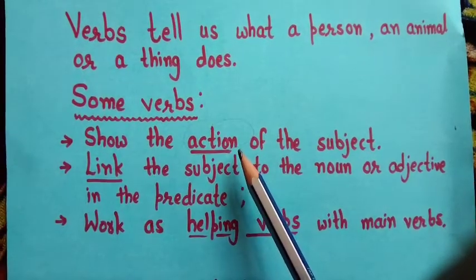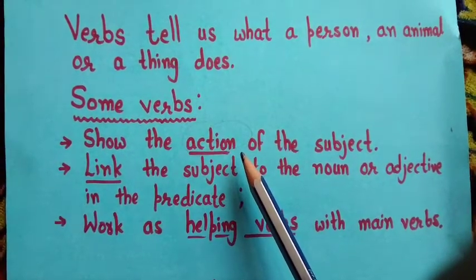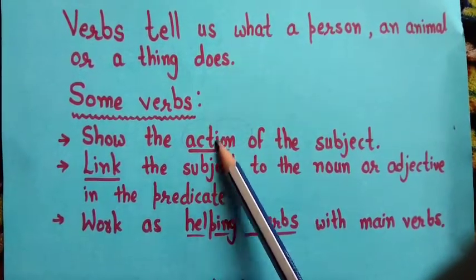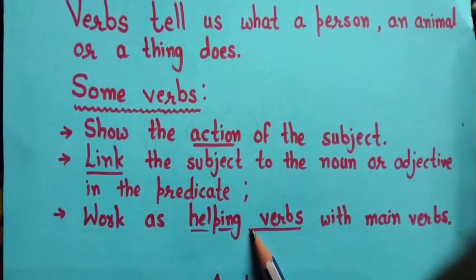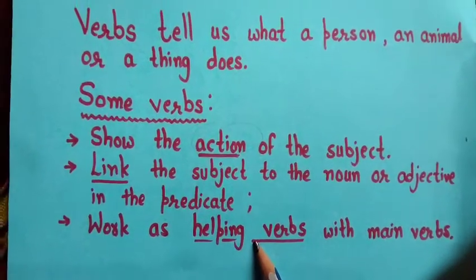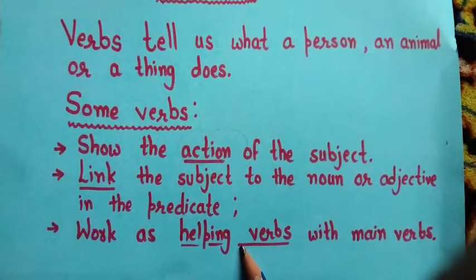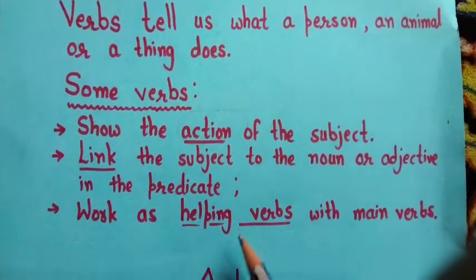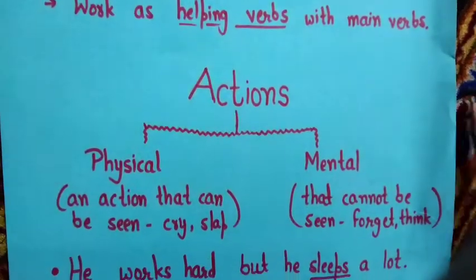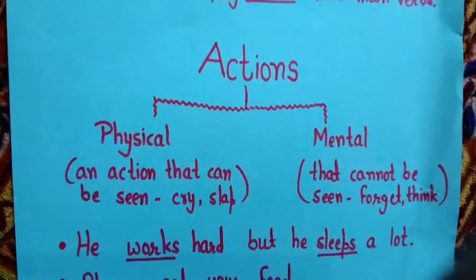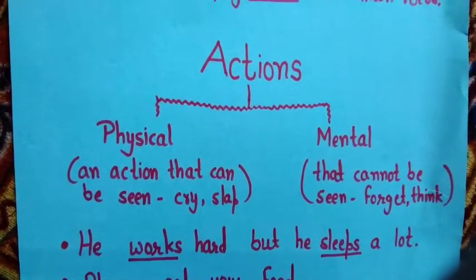So, verbs can be understood in these three ways. Now, we will discuss one by one. First, we have action verbs.